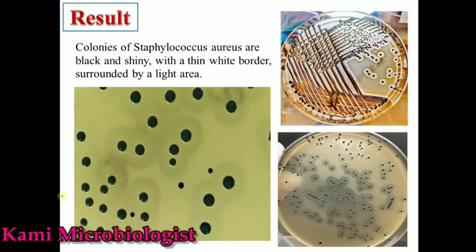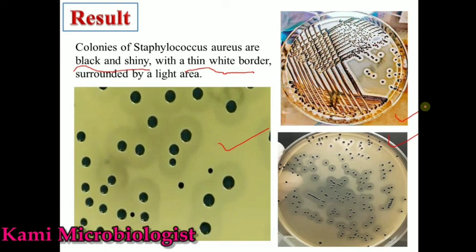Now these are the results. Although we talked that this medium is specially used for Staphylococcus aureus, we can also grow other bacteria like E. coli, Micrococcus luteus, yeast, and other bacteria. But it is mostly used for the isolation of Staphylococcus aureus. The colonies of Staphylococcus aureus are black and shiny, with a thin white border around them. As you can see, these are the colonies of Staphylococcus aureus.